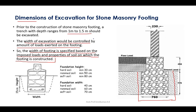There are three types of soil, each with its own foundation height and width requirements. For hard soil, minimum foundation height is 30 cm and width is 40 cm. For ramp soil, minimum foundation height is 50 cm and width is 60 cm. For soft soil, the minimum foundation height should be 70 cm.